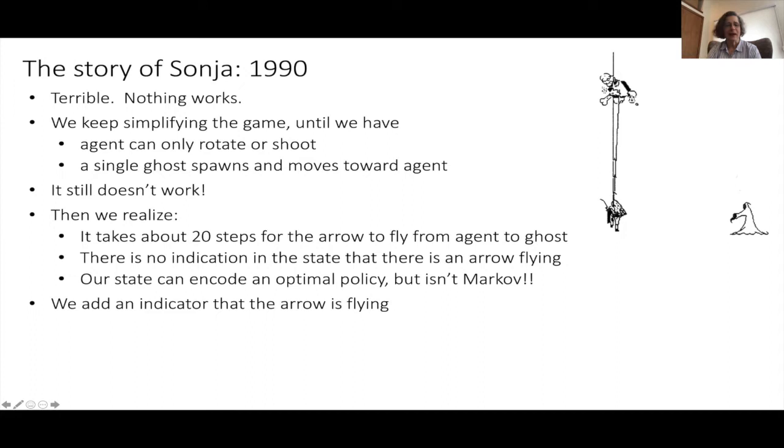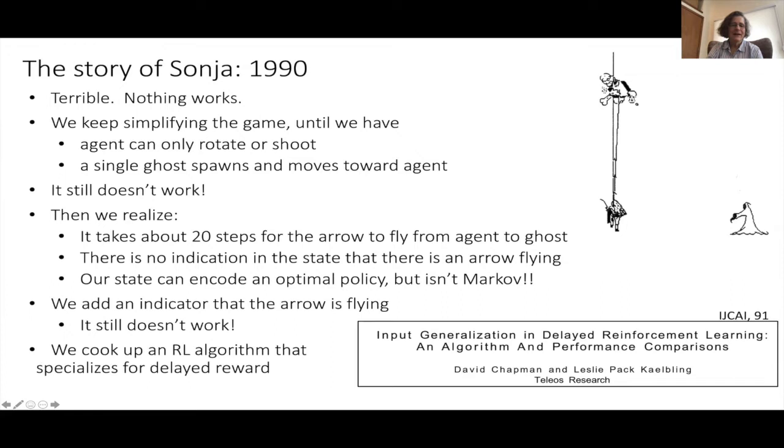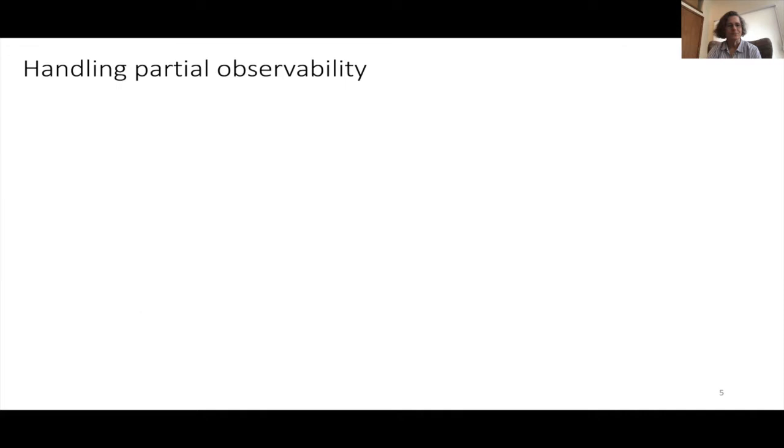We added a new bit to the game indicating whether there was an arrow flying toward the ghost. It still didn't work very well. Ultimately, that 20-step delay was very long. We cooked up a new reinforcement learning algorithm particularly focused on handling delayed reward, and then we were able to learn to play this silly little video game. That got me interested in partial observability.